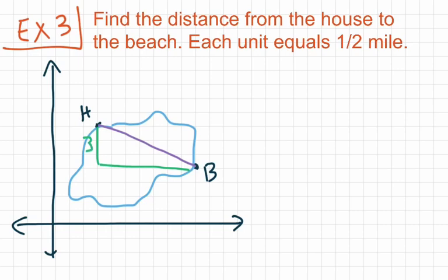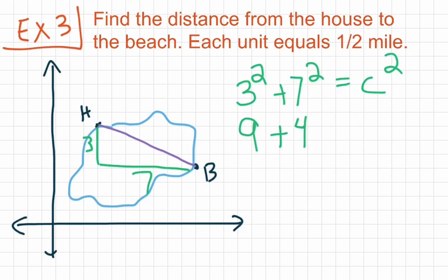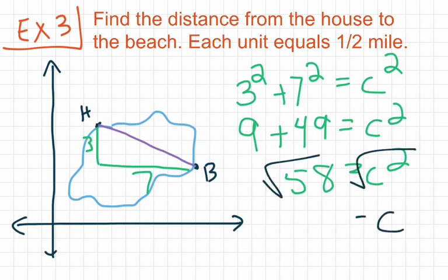This segment here has a length of three. This segment here has a length of seven. So we're going to have three squared plus seven squared equals C squared, just like before, giving us nine plus 49 equals C squared. So 58 equals C squared. And from our earlier example, we remember that C is going to be equal to 7.6 units.